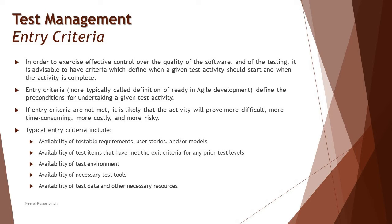Availability of test items that have met the exit criteria of a prior test level can be an entry criteria for the next level — for example, exit criteria of unit testing can be used as entry criteria for integration testing. Availability of the environment required to execute test cases is another entry criteria, since a certain environment has to be prepared before you're ready for execution. Availability of test data and other necessary resources are also entry criteria — anything that confirms you are ready to get started with a phase, level, or the entire process.